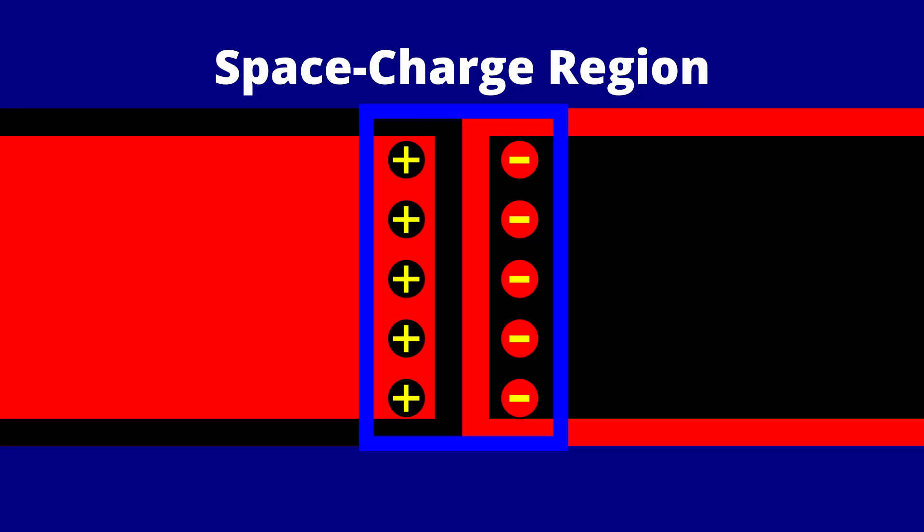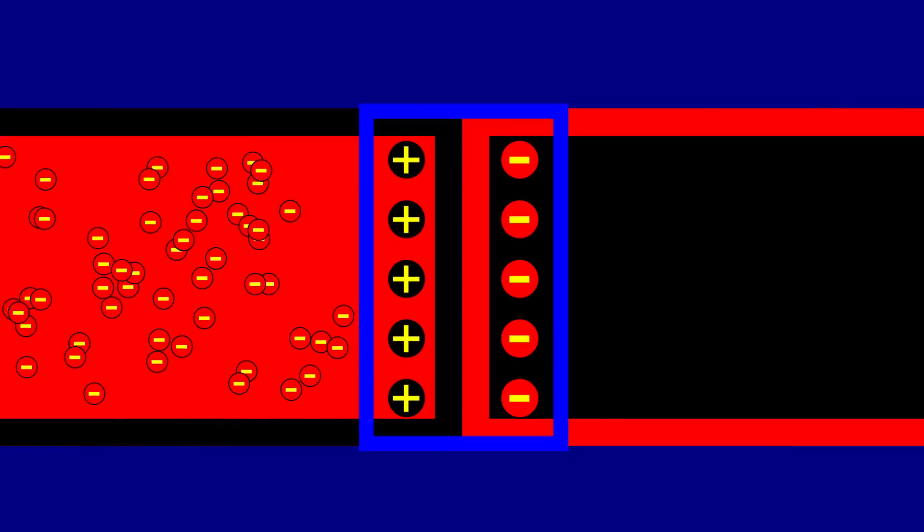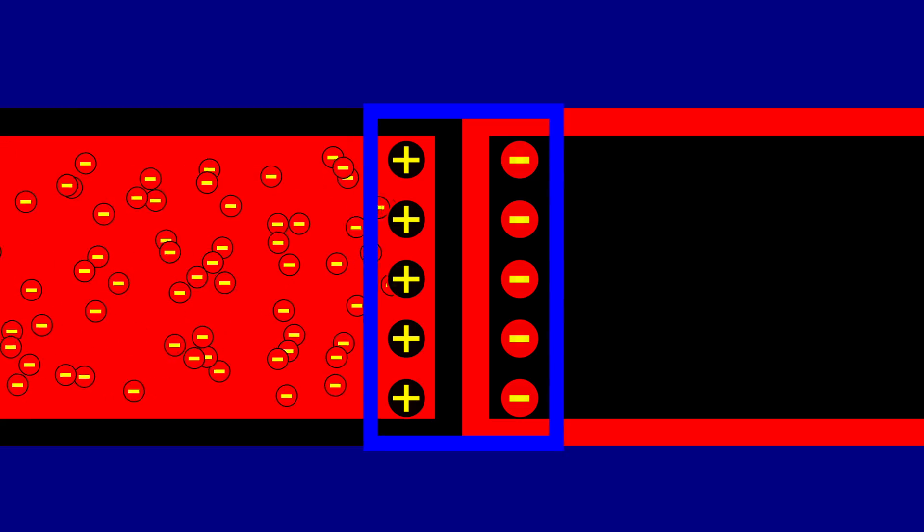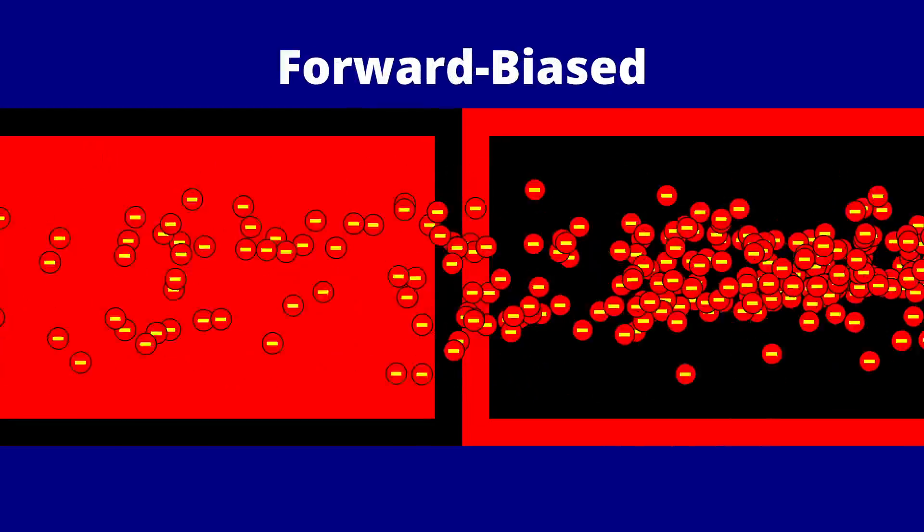This creates what is called the space charge region within the device. With this barrier in place, no current can flow. When we apply a voltage across this that opposes the internal electric field, we reduce the width of the space charge region. If this voltage increases sufficiently, then the space charge region width is essentially reduced to zero, and current now flows through the device unabated. This condition is referred to as being forward biased.